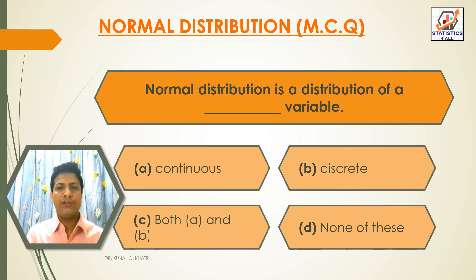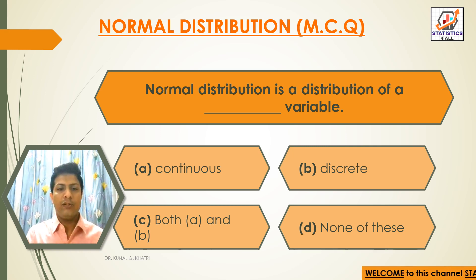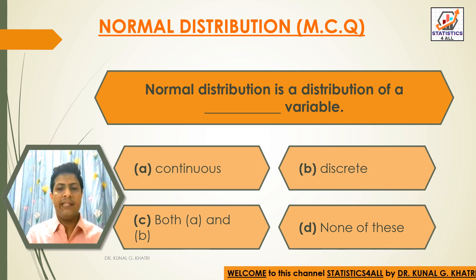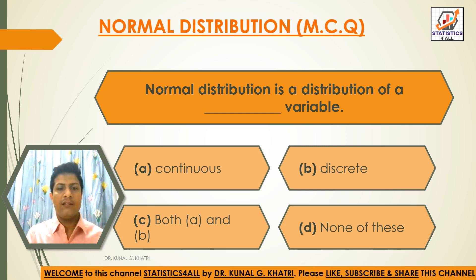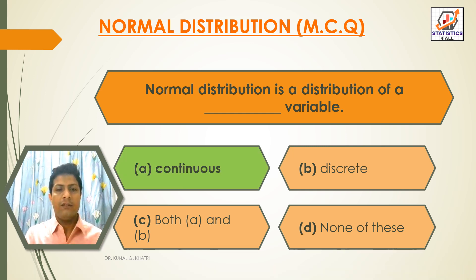Next question: normal distribution is a distribution of a dash variable. Option A: Continuous. Option B: Discrete. Option C: Both A and B. Option D: None of these. The answer is Option A — continuous. Normal distribution is a distribution of a continuous variable.